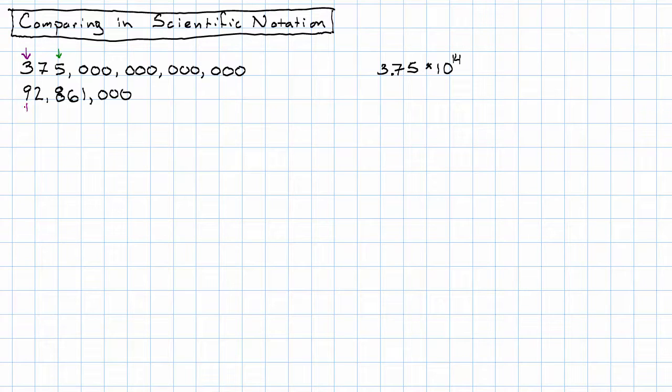For the other number, most significant digit, least significant digit, 9.2861 times, then the magnitude is 0, 3, 6, 7, 10 to the 7th.